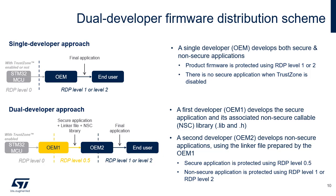The device supports the STM32 Dual Developer Firmware Distribution Scheme. In the Single Developer Scheme, one OEM develops both secure and non-secure applications, and both must be protected using RDP level 1 or level 2. In the Dual Developer Scheme, the first OEM develops the secure application and its associated non-secure callable library, and provides a predefined linker file to the second OEM that develops the non-secure application. The secure application must be protected using RDP level 0.5 after installation, and the final non-secure application must be protected using RDP level 1 or level 2.